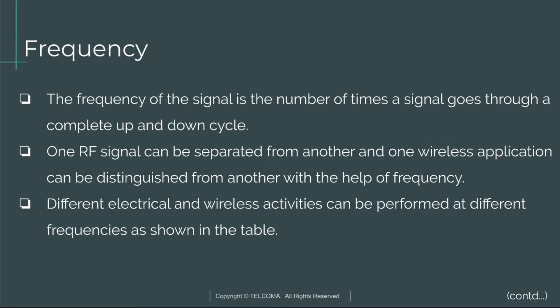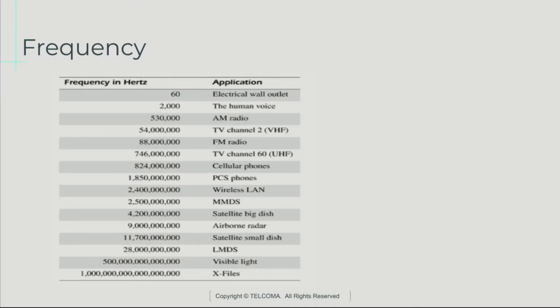Next is frequency. The frequency of a signal is the number of times a signal goes through a complete up and down cycle. One RF signal can be separated from another, and one wireless application can be distinguished from another, with the help of frequency. The first column shows the frequency in Hertz and the second column shows the application for which that frequency is used.